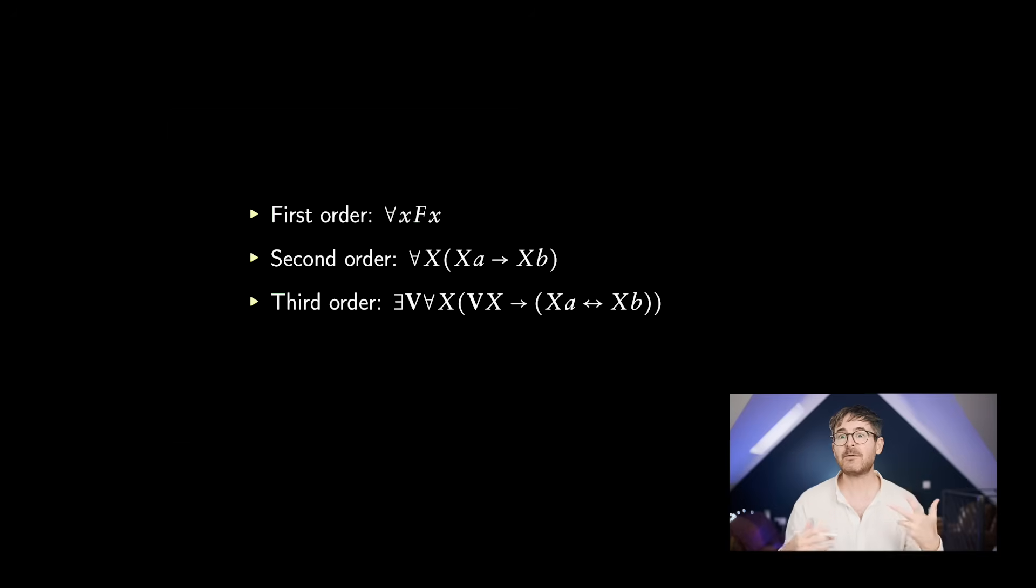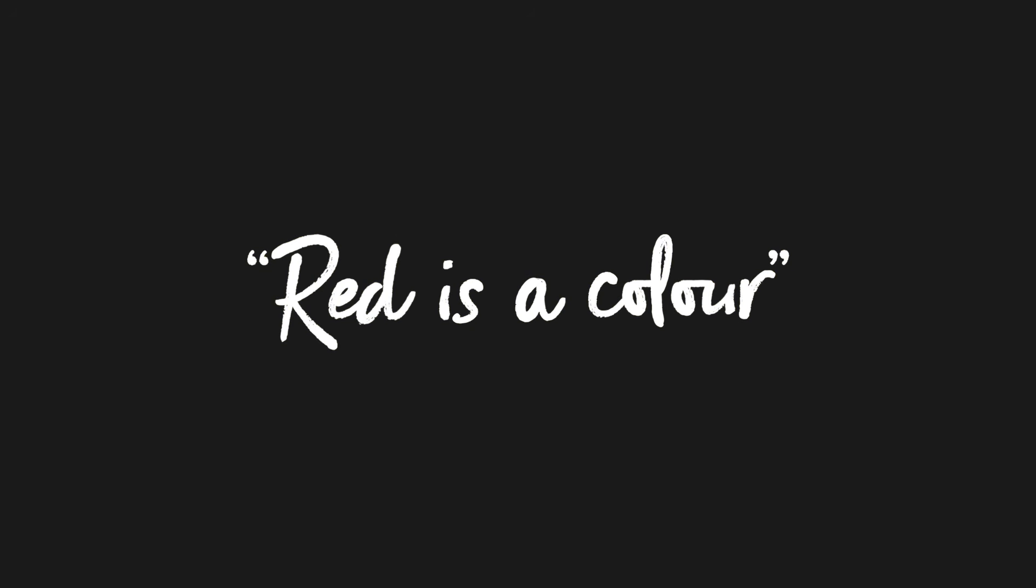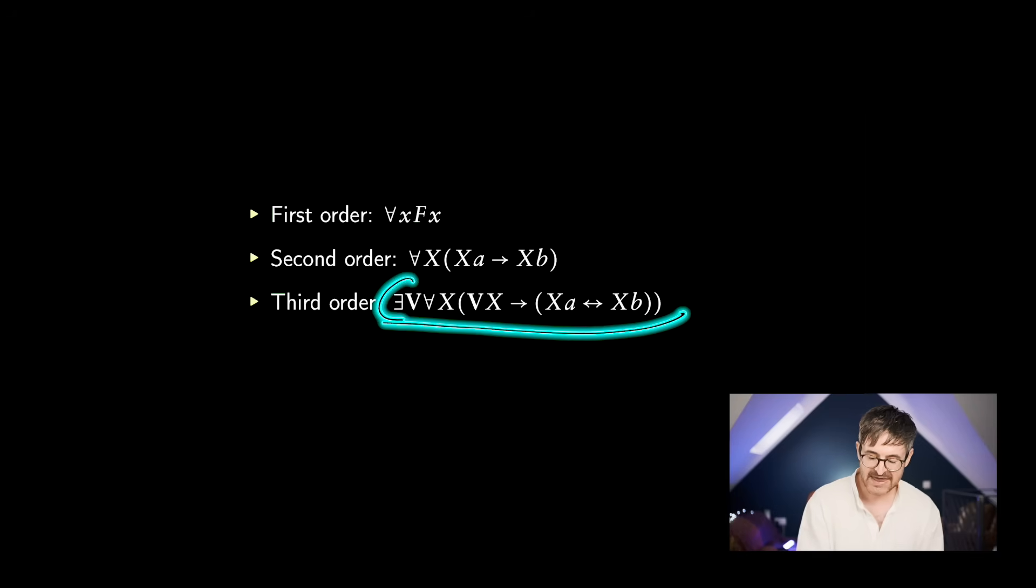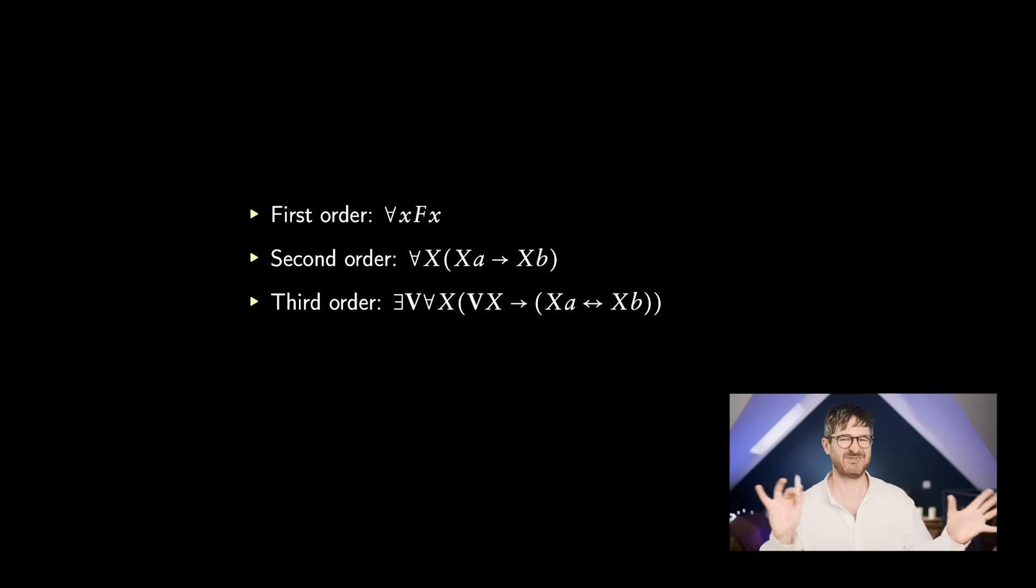Go up another level, we're now talking about third order logic, and we're talking about properties of properties. So things like red is a colour. I'm applying a property being a colour to a property being red. So a sentence like this, here we've got a third order quantifier. This is a property of properties. So what this is saying is there is some property of properties, like being a good property such that for any property, if it's one of those, like if it's a good property, then A and B don't differ. So this might reflect a situation where A and B share all their good properties, but maybe they differ in their bad properties.